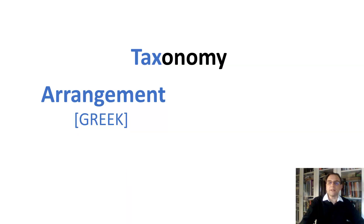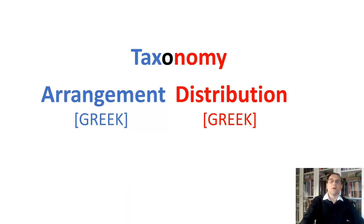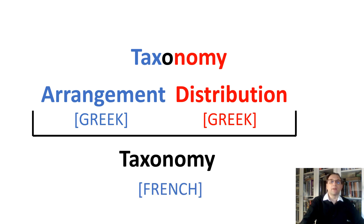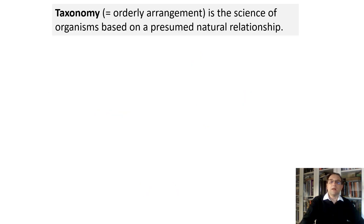Taxis is a Greek word meaning arrangement. Nomi also has Greek origin or etymology. In the early 19th century, the French language united these two words into one: taxonomy.